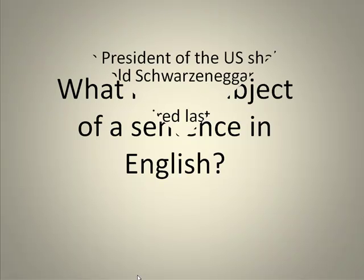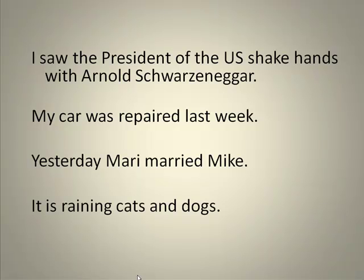For example: 'I saw the President of the U.S. shake hands with Arnold Schwarzenegger.' Very often we say that the subject of a sentence is what the sentence is about, but in this first sentence, the sentence seems to be more about the President of the U.S. shaking hands with Arnold Schwarzenegger than it does about 'I' — and 'I' actually is the subject of the sentence.